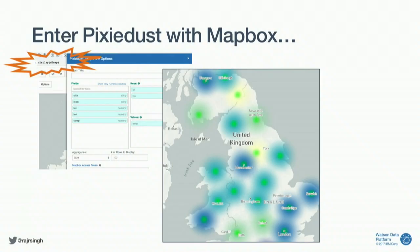Wouldn't this be nicer? Pixie Dust is an extension mainly written by a colleague of mine, another developer advocate in my group. I just implemented the mapping part. He did all the tough part about reverse engineering Jupyter notebooks and figuring out how to write new Python code inside the kernel and extend it in amazing ways.